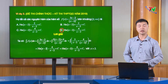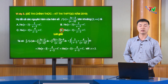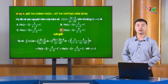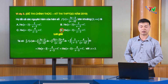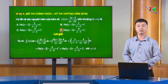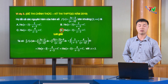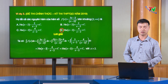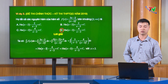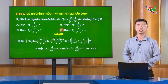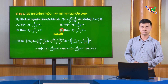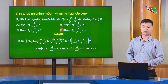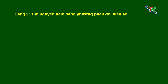Đây là 3 ví dụ điển hình trong dạng số 1 — dạng toán tìm nguyên hàm bằng định nghĩa, tính chất và bảng nguyên hàm của một số hàm thường gặp. Qua 3 ví dụ này, các em phải nắm vững bảng nguyên hàm, tính chất nguyên hàm, và phương pháp biến đổi hàm số để chuyển về dạng nguyên hàm cơ bản hơn. Sau đây chúng ta chuyển sang dạng thứ 2: tìm nguyên hàm bằng phép đổi biến số.